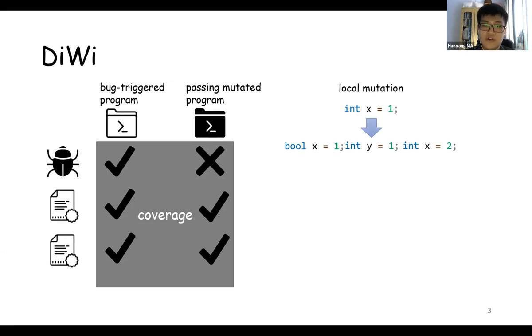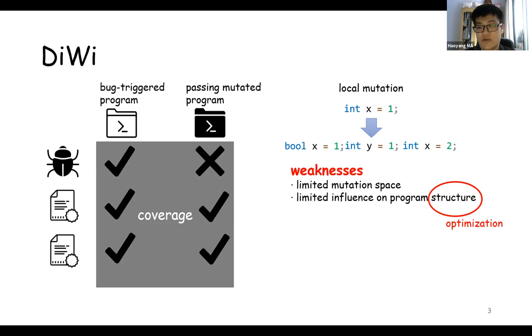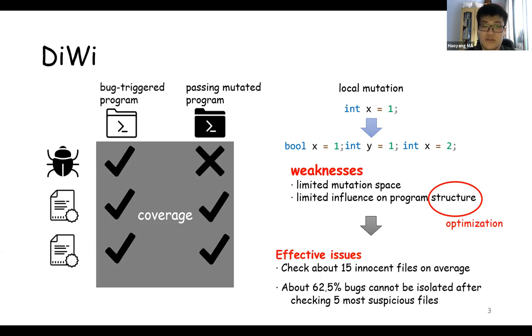This small scope mutation strategy has some strengths, like it's easy to be implemented, but also has some weaknesses. For example, it has limited mutation space and limited influence on program structure. Program structure here has a tight relationship with optimization, and during optimization many bugs may occur. Because of these weaknesses, Divi has some effectiveness issues. For example, using Divi, developers still need to check about 15 innocent files on average, and about 62.5% bugs cannot be isolated after checking the most suspicious files.